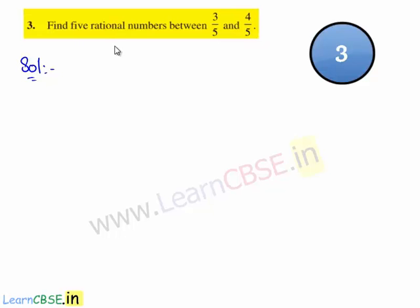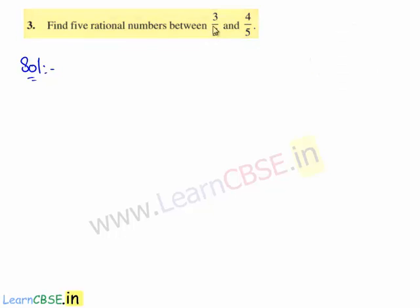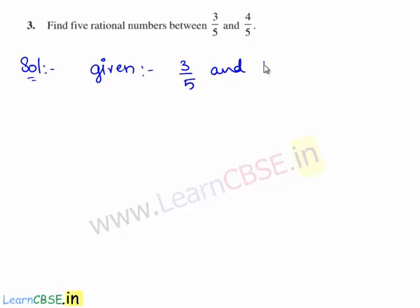Now let us move on to the third question. The question is: find five rational numbers between 3 by 5 and 4 by 5. Now let's move to the solution. The given two rational numbers are 3 by 5 and 4 by 5.